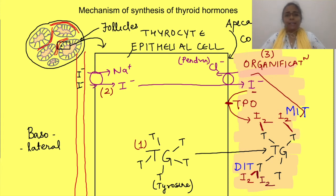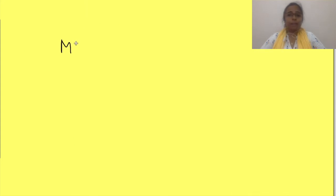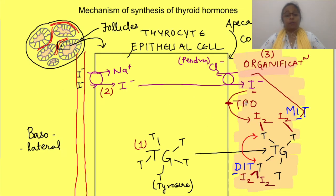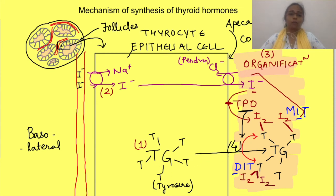MIT and DIT are not thyroid hormones themselves. It is the coupling or combination of these iodinated tyrosines which produces thyroid hormones. One MIT and one DIT couple to form triiodothyronine (T3), and two DITs couple to form tetraiodothyronine (T4), also known as thyroxine. This coupling reaction also occurs in the presence of the same enzyme, thyroid peroxidase. So thyroid hormones form within the thyroglobulin molecule.